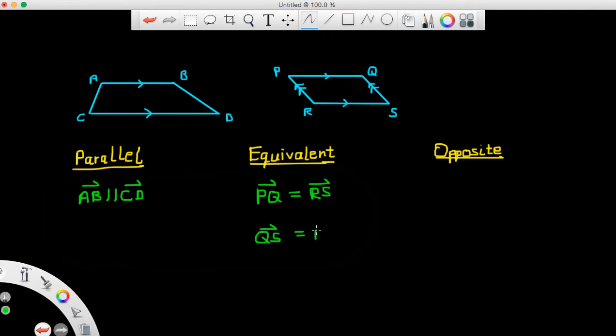Now opposite vectors have the same magnitude but opposite direction. Again, the location of the vectors does not matter.